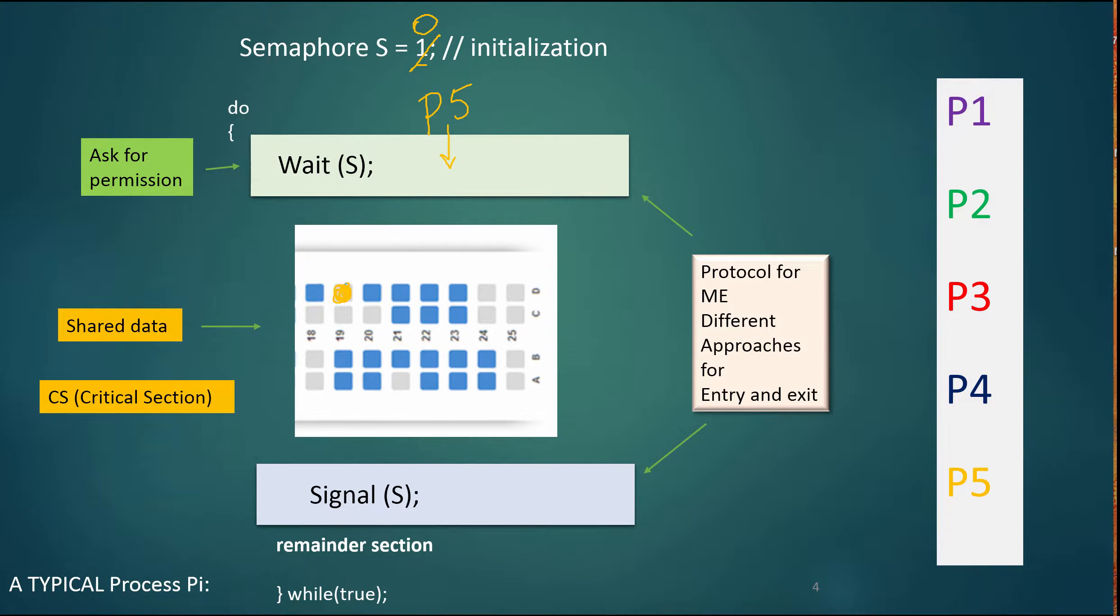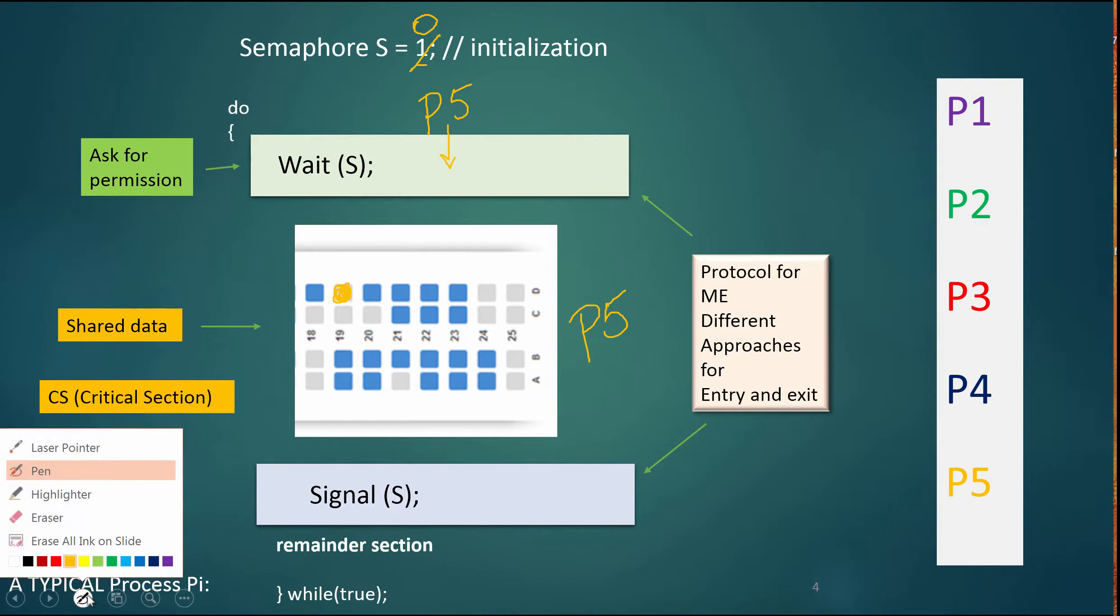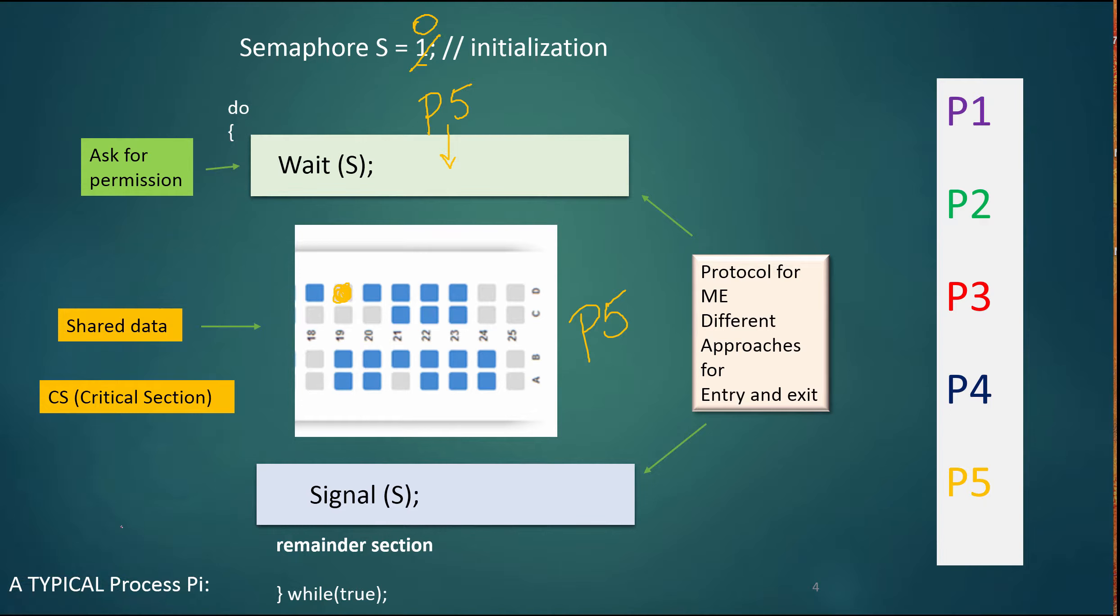And while P5 is booking the seat, if any other, oops P5 is in here booking the seat. So P5 basically owns the critical section and no other processes can get in there because now the value of the semaphore is zero. So if P3 or P2 or P1, if any of them were to come here and run their wait, then what would happen is they would have to sit there and wait.